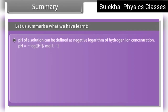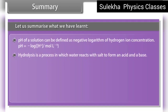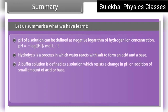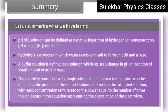pH is defined as the negative logarithm of hydrogen ion concentration. Hydrolysis is a process in which water reacts with a salt to form an acid and a base. A buffer solution is defined as a solution which resists a change in pH on addition of a small amount of acid or base. The solubility product of a sparingly soluble salt at a given temperature is the product of the concentrations of its ions in the saturated solution, with each concentration term raised to the power equal to the number of times the ion occurs in the dissociation equation.